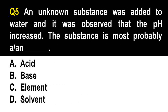Question number 5. An unknown substance was added to water and the pH increased. The substance is most probably: A. Acid. B. Base. C. Element. D. Solvent. The correct answer is letter B. Adding an acid decreases the pH of a solution, while adding a base increases the pH. An acidic substance has a pH of less than 7, while a basic or alkaline substance has a pH of more than 7, up to 14. For the litmus paper test, remember BRA — if a substance turns blue litmus paper red, then the substance is an acid.